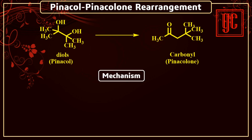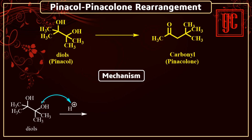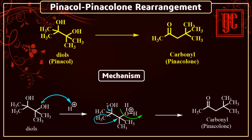Now we are going to discuss the mechanism of the reaction. The hydroxyl group of the diol, in the presence of acid, gets protonated. This protonated hydroxyl group acts as a leaving group and leaves the molecule, and a carbocation is formed. In order to neutralize the carbocation, a 1,2-alkyl group migration takes place and ketones are formed.